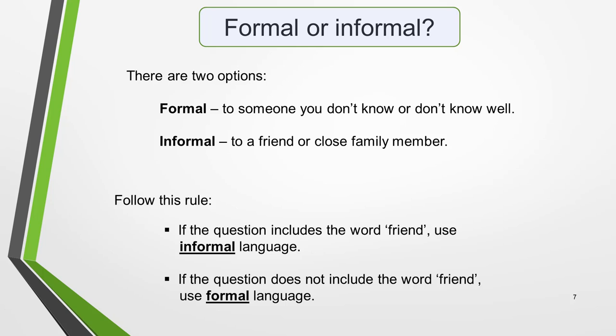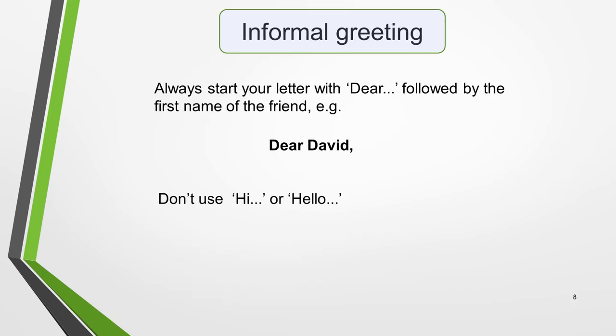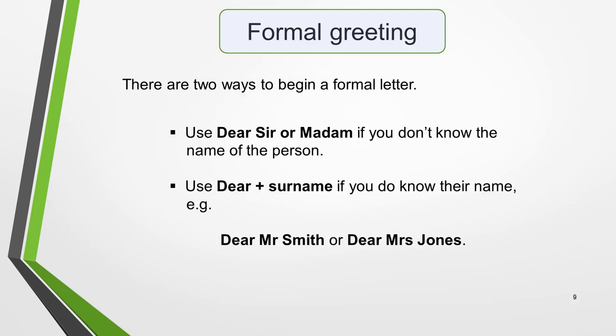This leads us on to the opening of the letter — the greeting. Always start an informal letter with 'Dear' followed by the first name of the friend, for example, 'Dear Ellen'. You probably use 'Hi' and 'Hello' in emails and texts, but for letters 'Dear' is more appropriate, so stick with this. If we were writing a formal letter of explanation, we would choose one of two options: use 'Dear Sir or Madam' if you don't know the name, or use 'Dear' plus their surname if you do know their name — for example, 'Dear Mr. Smith' or 'Dear Mrs. Jones'.